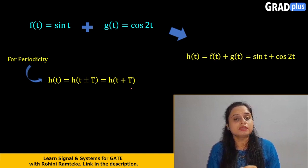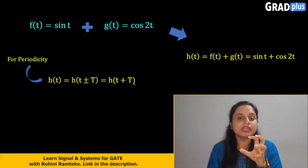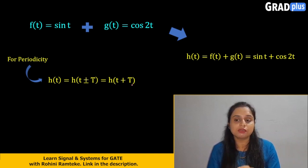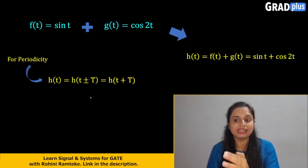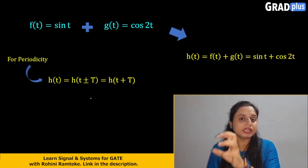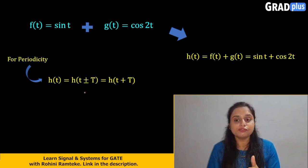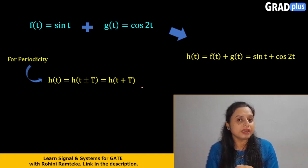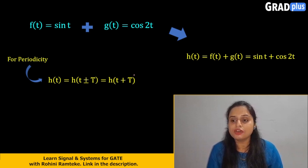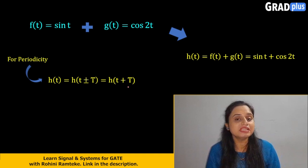Here, capital T is nothing but your fundamental time period — the total time period which results from the addition of these two signals. Whatever time period comes out when we add these two signals, that will be your fundamental time period. We know h(t) is the addition of these two signals, so we have to find out whether h(t + T) equals h(t) or not. For that, we need to find the value of T.